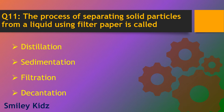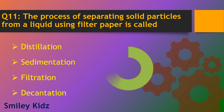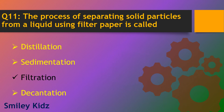Question number 11. The process of separating solid particles from a liquid using filter paper is called what? Options are distillation, sedimentation, filtration and decantation. The right answer is filtration. The process of separating solid particles from a liquid using filter paper is called filtration.